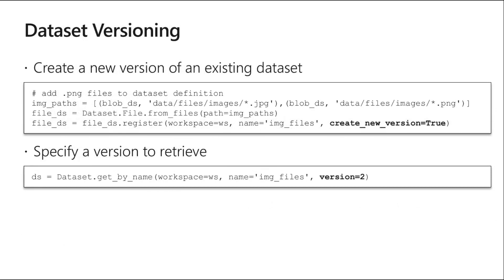To version your dataset, set `create_new_version=True` when registering. Running the command multiple times creates successive versions — for example, `diabetic_experiment` version 1, version 2, version 3, version 4. To retrieve a specific version, simply specify the version number and you get that particular version back from the cloud.